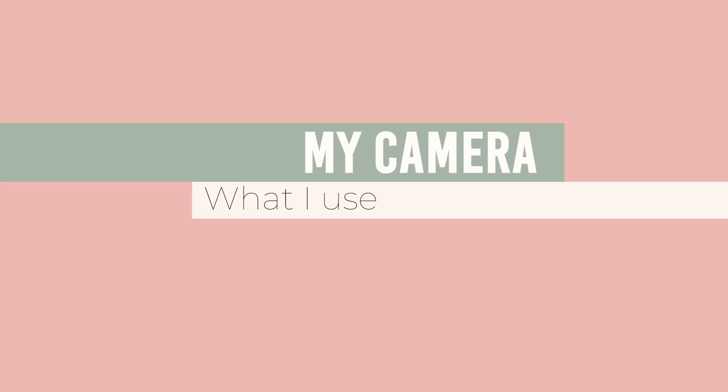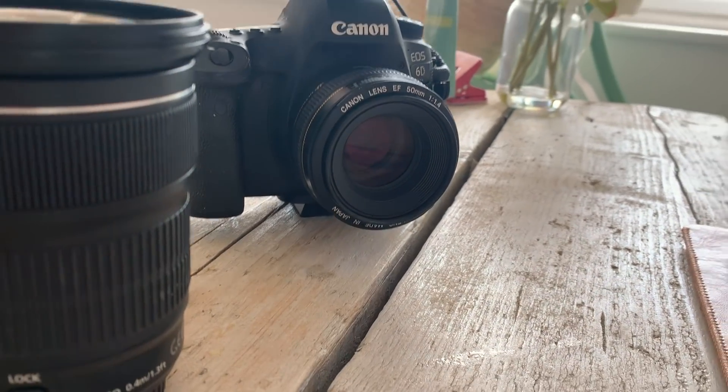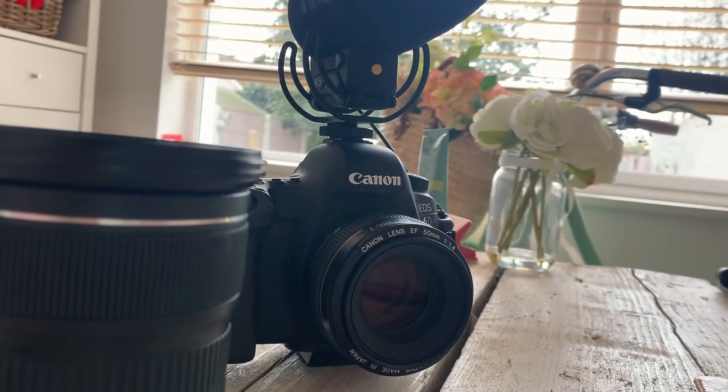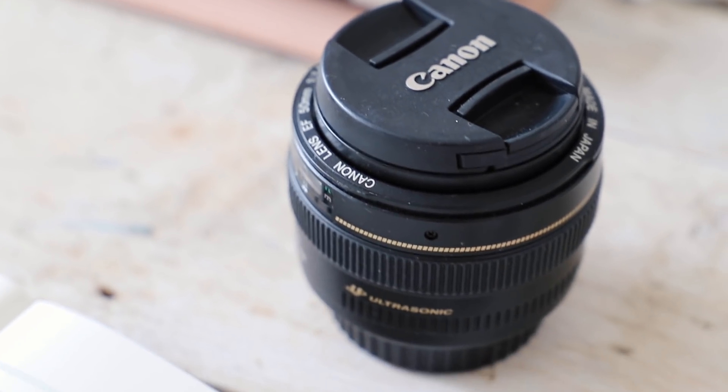So I'm going to start off with camera chat. I use a Canon 6D Mark II and I have two lenses. The lens I'm using now is what I use for portrait pictures — it gives you this lovely blurry background. That is a 50mm, 1.4.